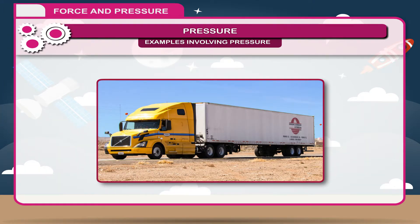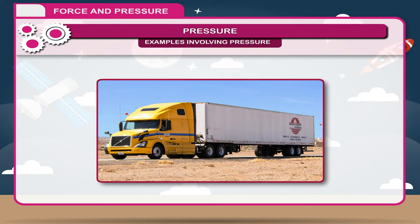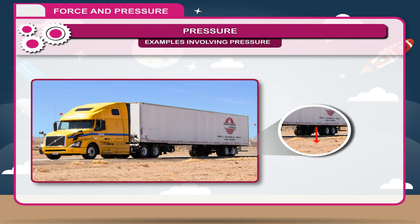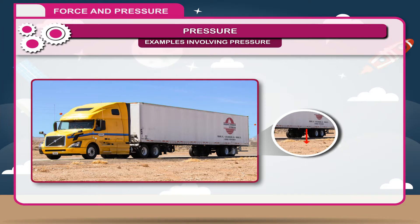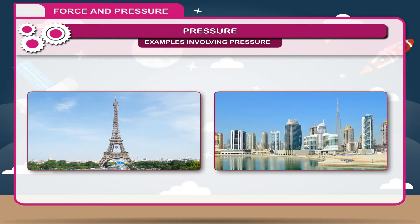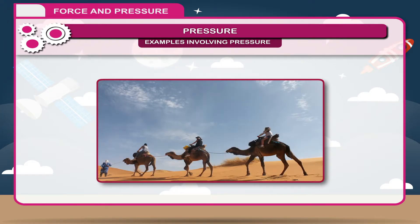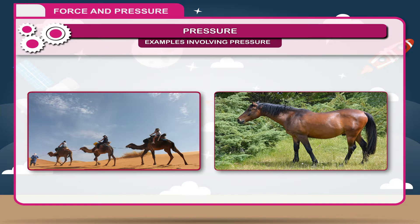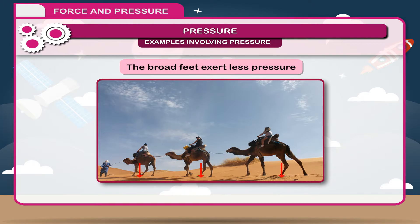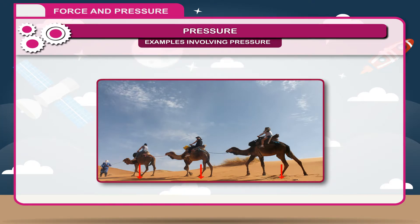2. Heavy trucks have 6 to 8 tyres instead of the conventional 4. This is done to increase the area of contact between the tyres and the road, reducing the pressure on the ground. 3. The base area of a high tower or tall building is quite large so that the ground is able to withstand the pressure of the building. 4. Animals like camels can walk easily in a desert compared to horses because camels have broader feet, and their broad feet exert less pressure on the sandy ground.